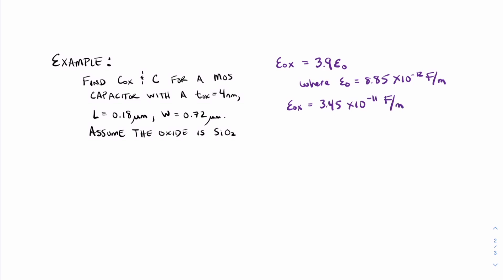Now that we have this, we can make another simple calculation to find C ox. C ox equals epsilon ox over the thickness of the oxide. So we have 3.45 times 10 to the minus 11 farads per meter divided by the thickness of the oxide, which is 4 nanometers, or 4 times 10 to the minus 9 meters. When we perform this calculation, we find that C ox equals 8.6 times 10 to the minus 3 farads per meter squared.